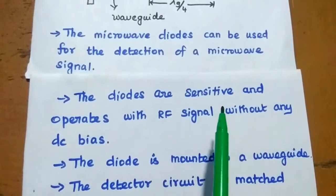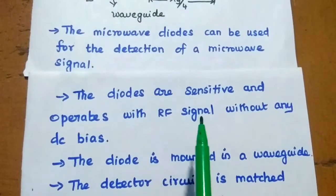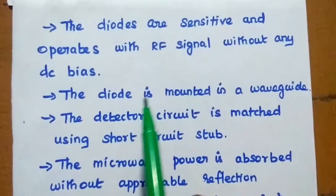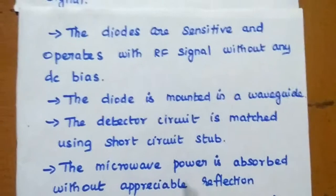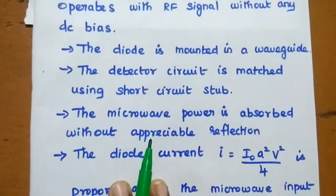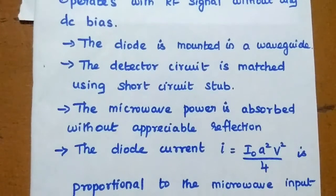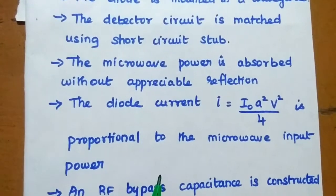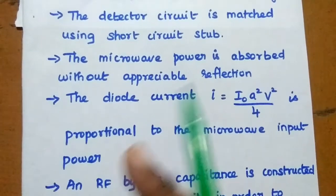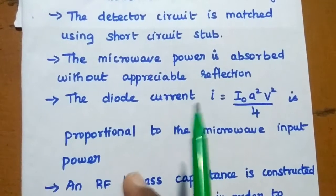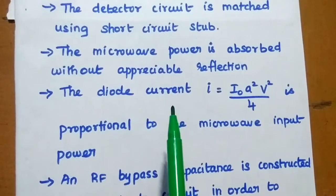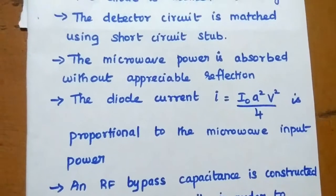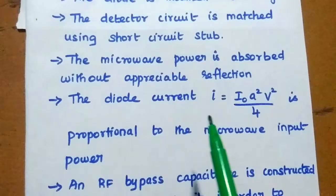The diodes are very sensitive and it operates with RF signal without any DC bias. The diode is mounted inside the waveguide. The detector circuit is matched using the short circuit step at the other end. The microwave power is absorbed without appreciable reflection, that is it is maximum absorbed all the signal energy. The remaining signal whichever passing apart from this diode can be match-terminated by the short circuit step.